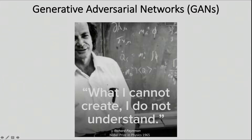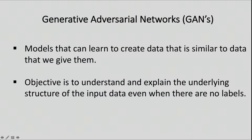This is an exciting area. It's gotten a lot of attention lately, a lot of breakthroughs here in generative adversarial networks, GANs. These are based on what we call a two-player minimax game, and taking those principles and applying them to artificial neural networks, where we're going to have two artificial neural networks that basically compete with each other. In many use cases, these models can learn to create data that is similar to data that we give them. The objective is to understand and explain the underlying structure of the input data, even when there are no labels — in an unsupervised learning fashion.